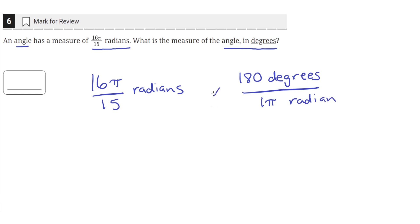So if we multiply these two quantities together, we can see that the radians here would cancel out and we would be left with units of degrees in our answer.